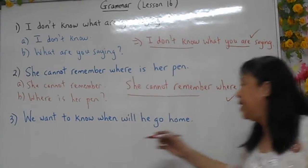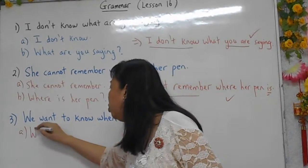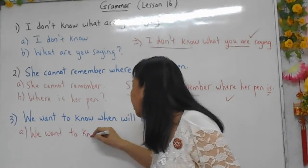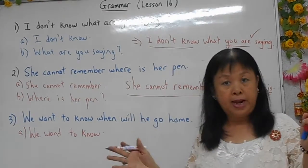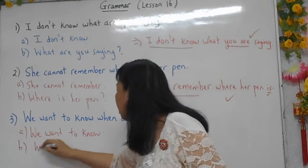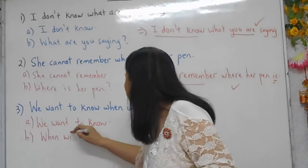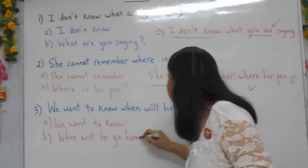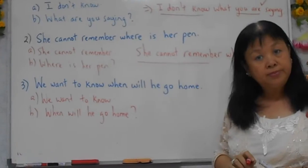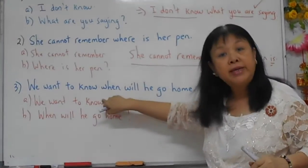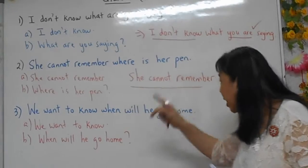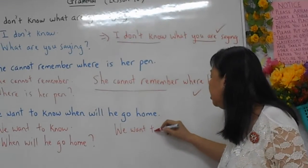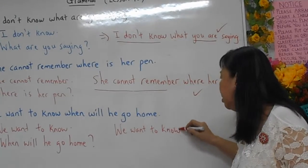Lastly, same case again. 'We want to know' — that's the first part. The second part is: 'When will he go home?' — it's a question. Combine the two together. The subject is a statement, so the answer would be: 'We want to know...'